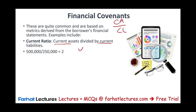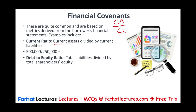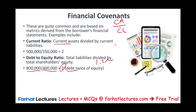You could also take current assets minus current liabilities to find working capital. The bank might say they want working capital to be at least $200,000 at any point. If you violate those numbers, there are consequences. Another thing lenders look at is debt to equity — total debt divided by total equity. For example, $800,000 in debt and $400,000 in equity gives a ratio of two, meaning debt is twice the amount of equity. The bank might say you cannot have more than a debt-to-equity ratio of two. To improve the ratio, you should reduce debt or increase equity.